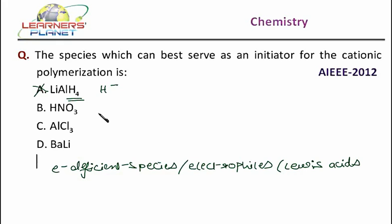The next is nitric acid. Nitric acid gives out H plus ions and NO3 minus ions in solution. So it is an acid. It is a Bronsted acid. Which is giving out H plus ions in the solution. Or you can say it is an Arrhenius acid.